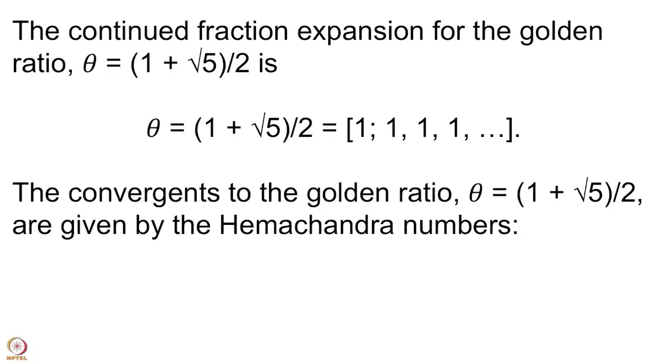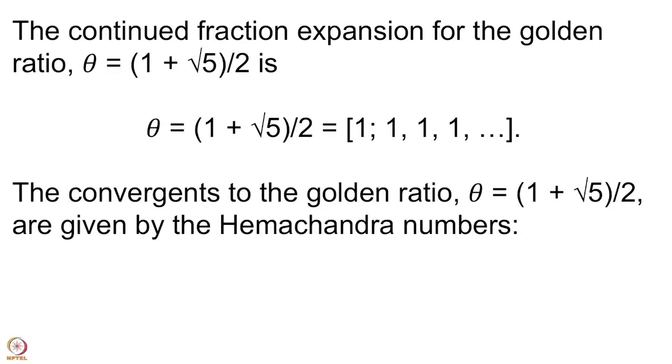This is a very important number from many points of view. One point of view is that its convergents are some very interesting numbers — these are the Hemachandra–Fibonacci numbers: 1/1, 2/1, 3/2, 5/3, 8/5, 13/8, 21/13, and so on. After all, you just have 1 at each step and you are simply adding them up.